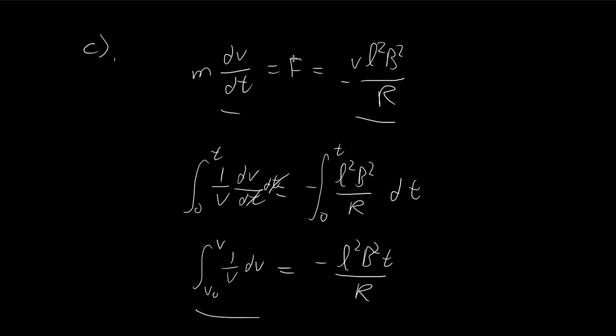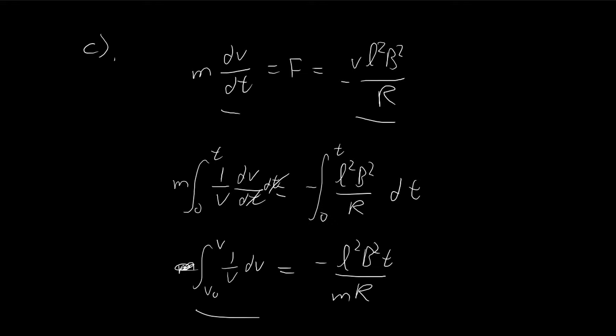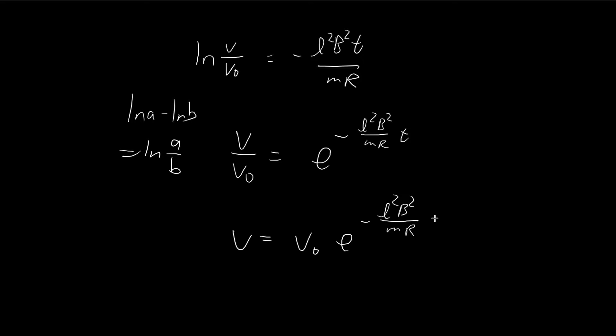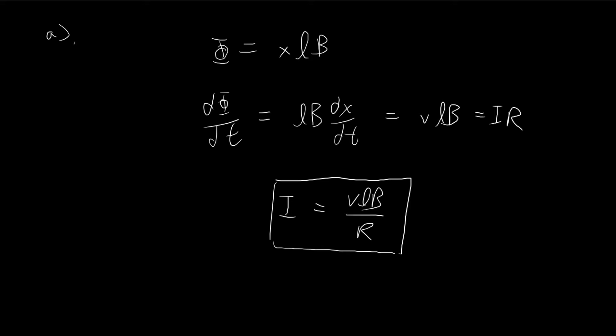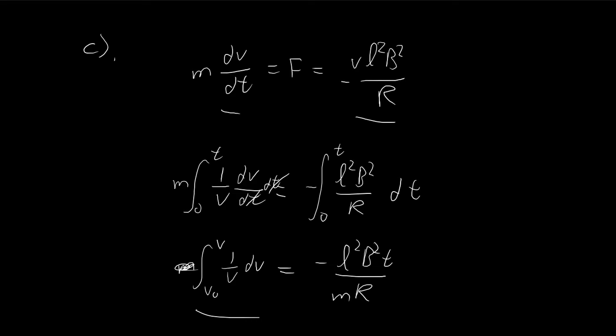So we get natural log of V minus natural log of V₀, which results in natural log of V/V₀. But we need mass times acceleration equals force, so there's an M — we should move the M over to this side. So this is going to be equal to negative L²B²t divided by MR. Raising both sides to the power of e, velocity is equal to the initial velocity V₀ times e^(−L²B²t/MR). As t tends to infinity, this whole term tends to zero, so the rod gradually slows down until it reaches zero. This is the answer for part C.